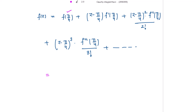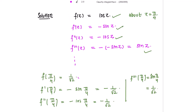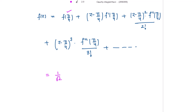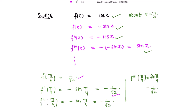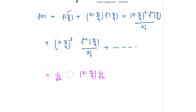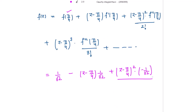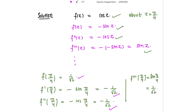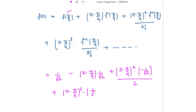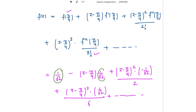Replacing the values: f(π/4) = 1/√2, so the first term is 1/√2. The first derivative at π/4 is -1/√2, so the second term is -(z - π/4)/√2. The second derivative at π/4 is -1/√2 divided by 2!, giving -(z - π/4)²·(1/√2)/2. The third derivative at π/4 is 1/√2 divided by 3!, giving +(z - π/4)³·(1/√2)/6.